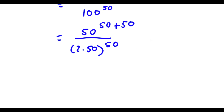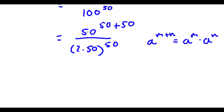Now if I have something in the form a to the power of m plus n, this is equal to a to the power of m times a to the power of n. So 50 to the power of 50 plus 50 is going to equal 50 to the power of 50 times 50 to the power of 50.